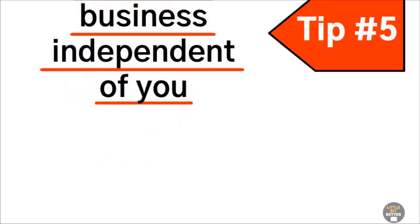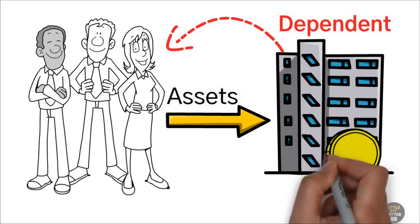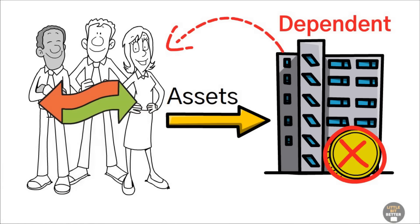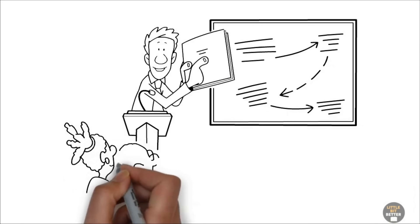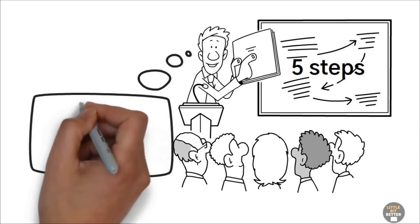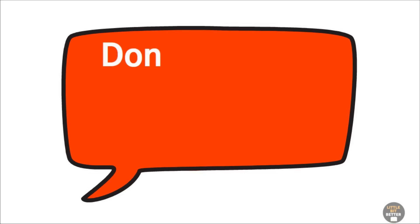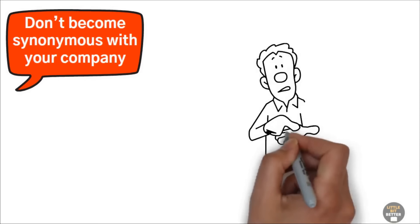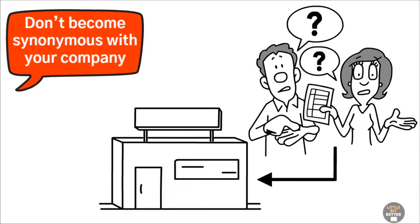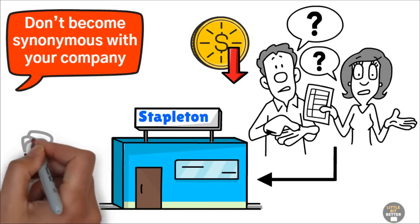Ted's tip number five, make the business independent of you. When people are the main assets of a business, the business becomes dependent on them and therefore not worth very much because these people can come and go. Ted told Alex that what he needed to do next was train people to handle each of the five steps of the process so he wouldn't have to be the only guy piecing every project together from scratch. Ted, don't become synonymous with your company. If buyers aren't confident that your business can run without you in charge, they won't make their best offer.